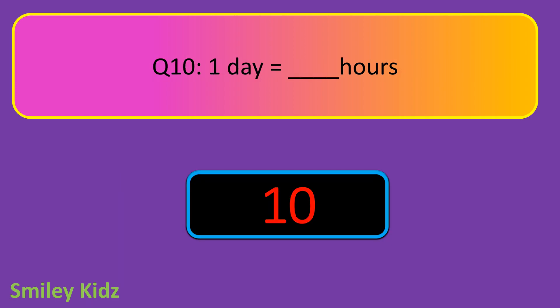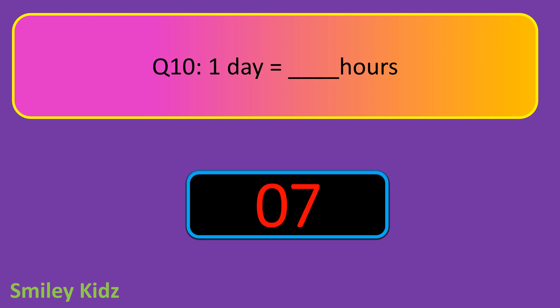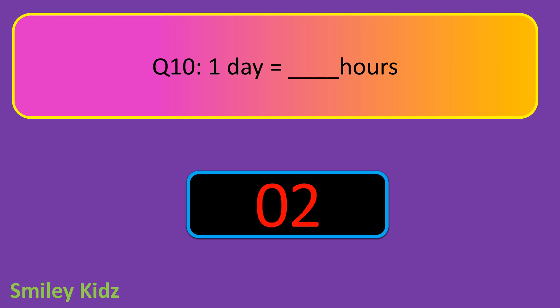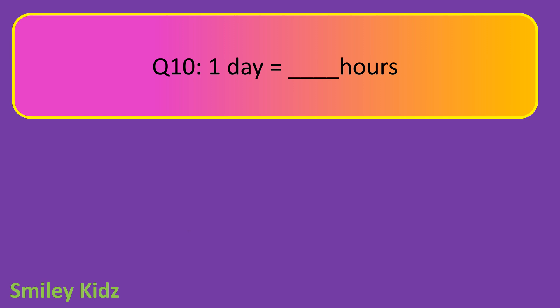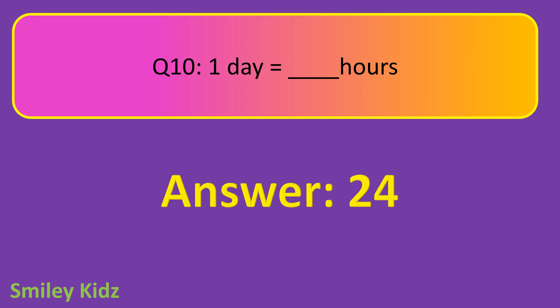Question number 10. One day is equal to dash hours. Your time starts now. And your time is up. The right answer is 24. One day is equal to 24 hours.